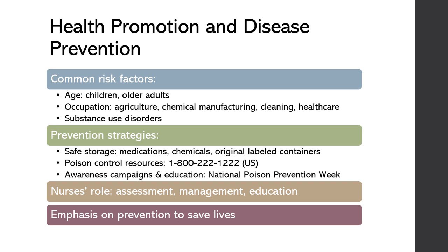Individuals working in certain industries such as agriculture, chemical manufacturing, cleaning services, or even health care may be at increased risk for exposure to toxic substances due to the nature of their work. People with substance use disorders are at risk for poisoning from alcohol, drugs, or other toxic agents, whether through overdose or interactions with other substances.